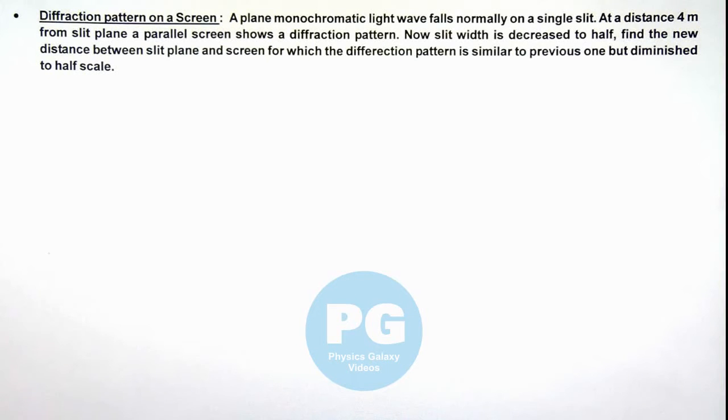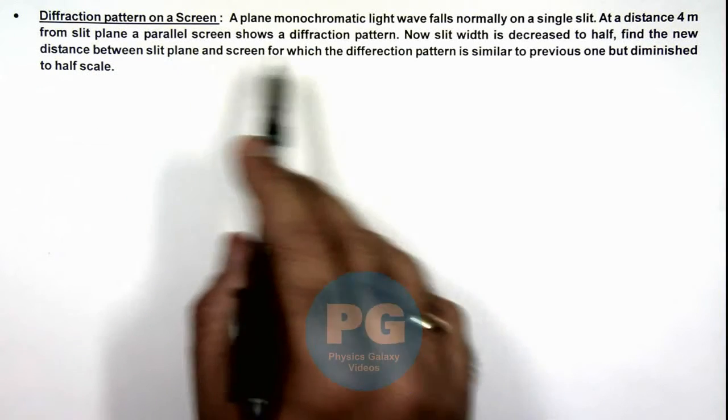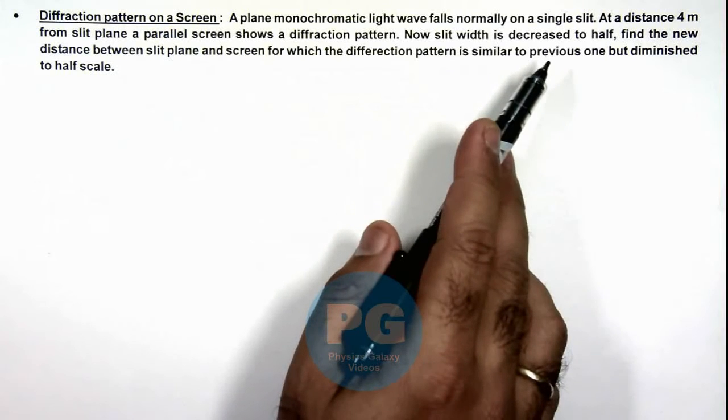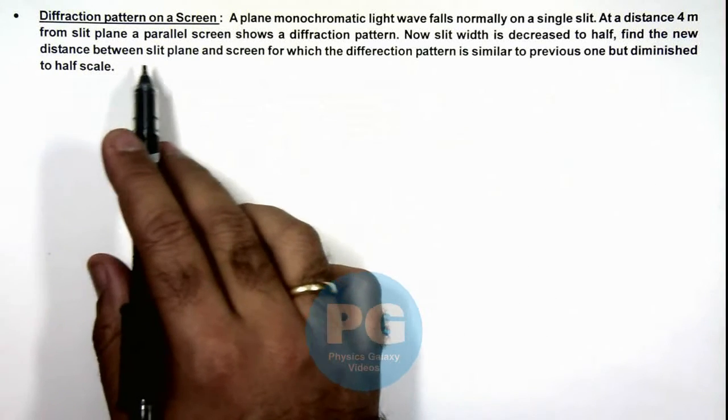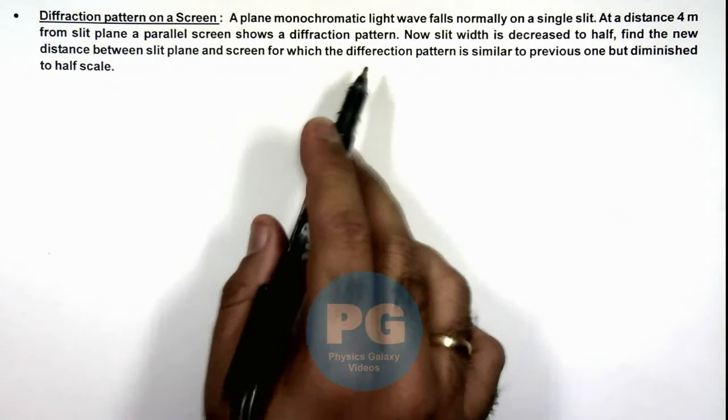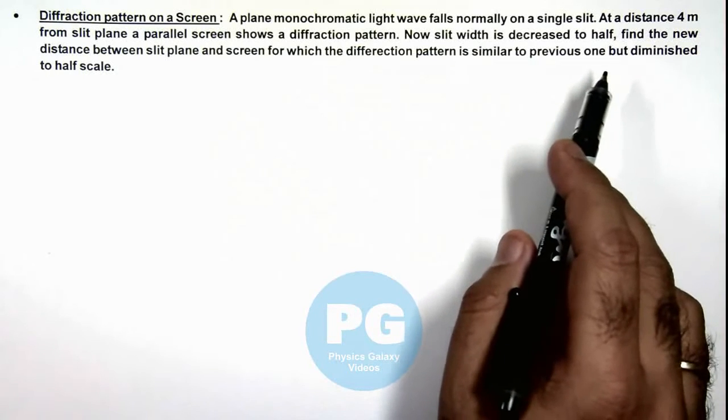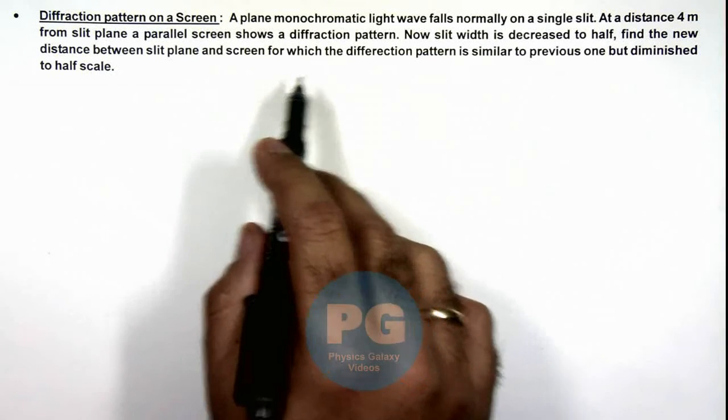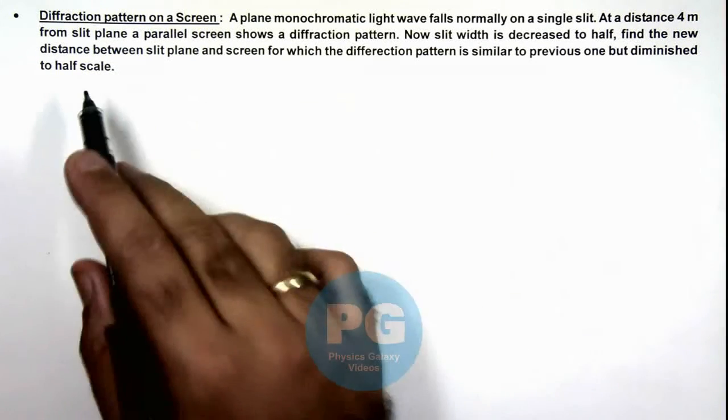In this illustration, we'll analyze a diffraction pattern on a screen. Here we are given that a plane monochromatic light wave falls normally on a single slit, and at a distance 4 meters from the slit plane, a parallel screen shows a diffraction pattern. Now slit width is decreased to half, and we are required to find the new distance between the slit plane and screen for which the diffraction pattern is similar to the previous one but diminished to half scale.